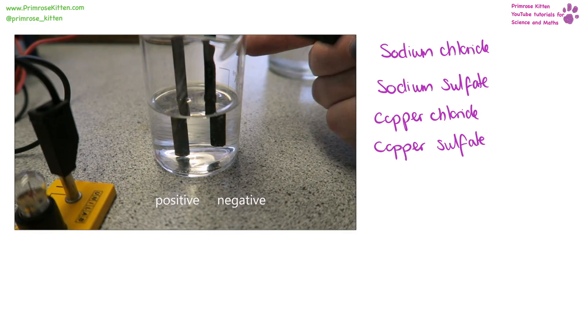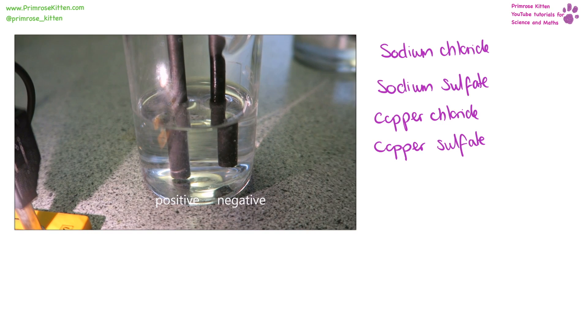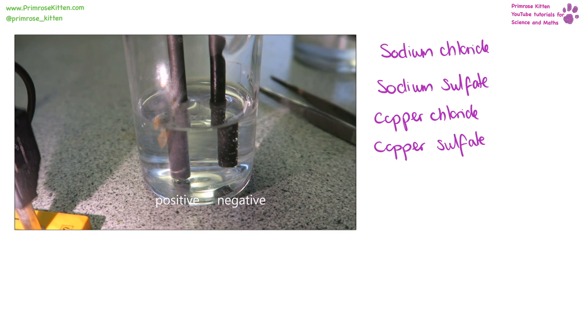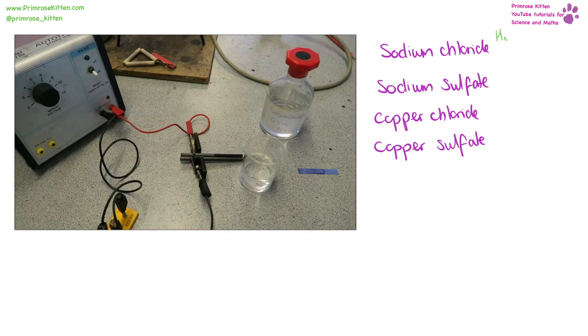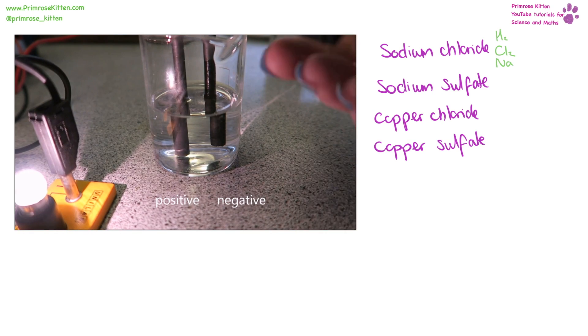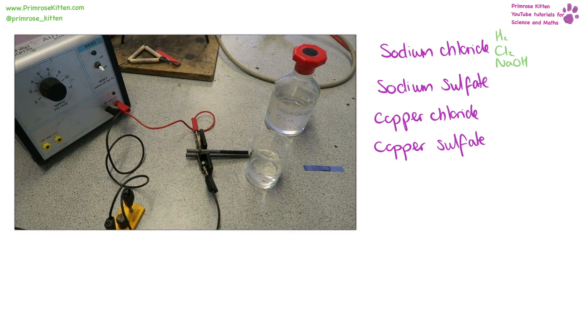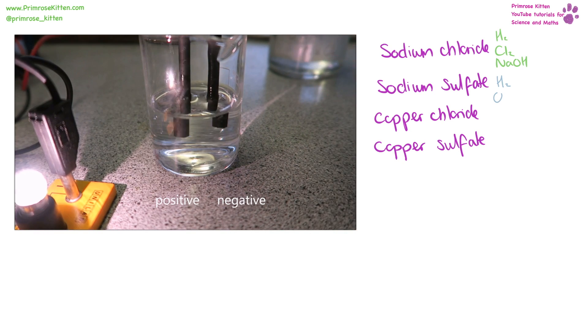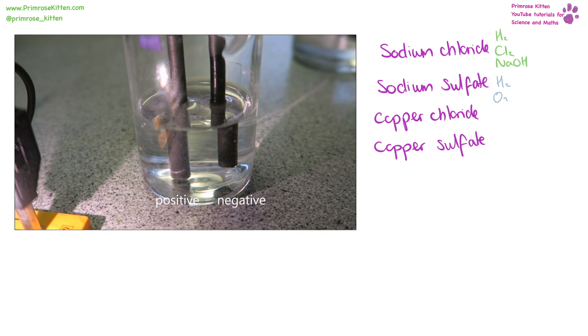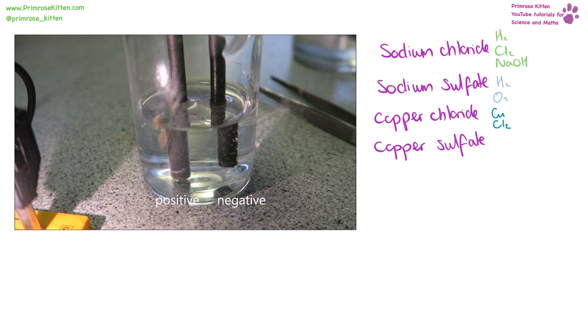The common setups for electrolysis that you need to know are sodium chloride, sodium sulfate, copper chloride, and copper sulfate. For sodium chloride, the products you are going to get are hydrogen gas, chlorine gas, and sodium hydroxide. For copper chloride, you are going to get copper and chlorine gas, and for copper sulfate you are going to get copper and oxygen gas.